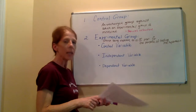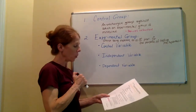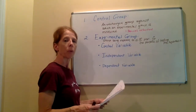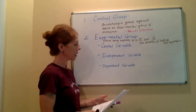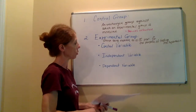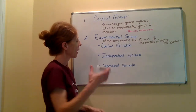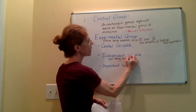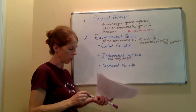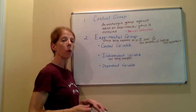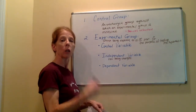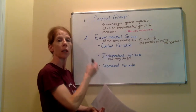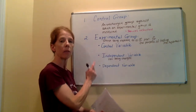Within the experimental group, we have three separate variables: a control variable, an independent variable, and a dependent variable. Now the independent and dependent variable might be pretty obvious to you. What's the independent variable? That's the variable that's being changed by the experimenter. When I'm done here, you're going to go back and look at what you've set up for your experiment and see if you have all of these things in place. Do you have a control group? Do you have an experimental group? And in your experimental group, do you have a control variable, an independent variable, and a dependent variable?